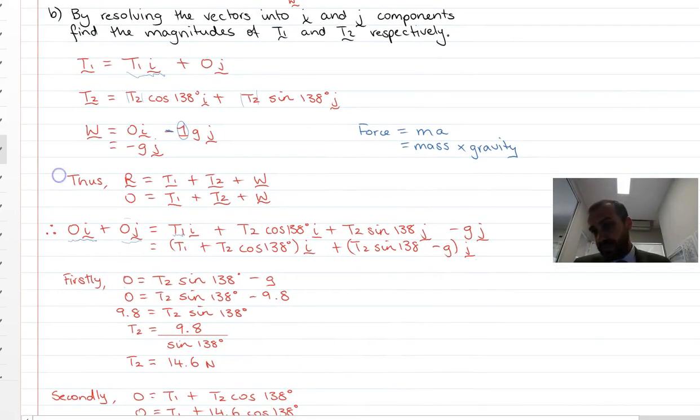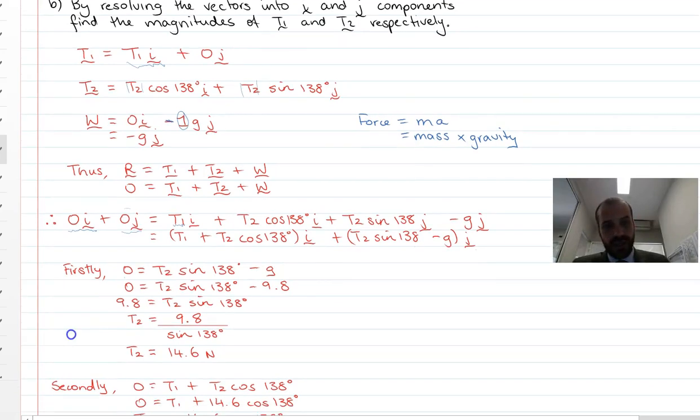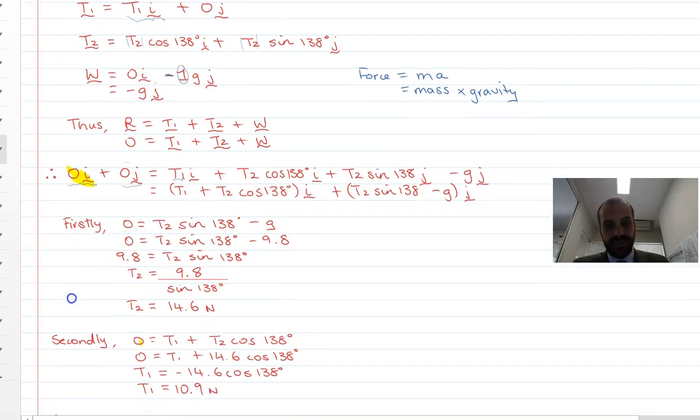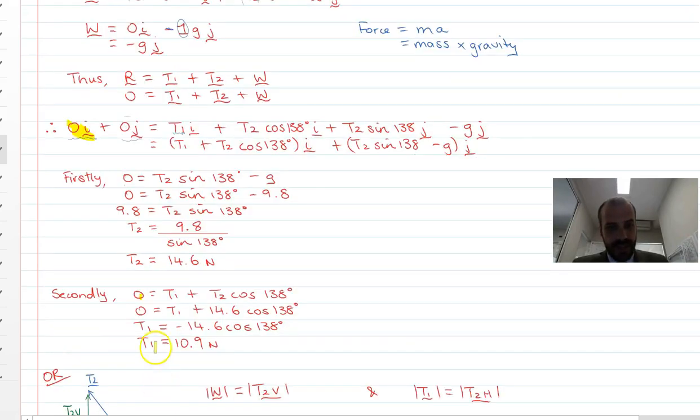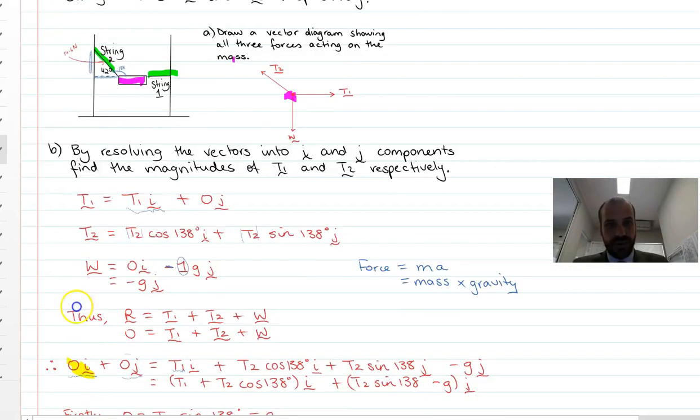We can do the same for our second string here. So we can say that in the i component, 0 equals t1 plus t2 cos 138. Rearranging, t1 equals 10.9 newtons.